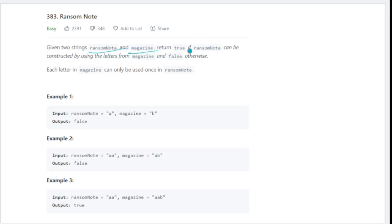Let's see what the question says. The question says you have been given two strings: ransom note and magazine. Return true if ransom note can be constructed by the letters of magazine, and false otherwise. That means you have two strings, one is ransom note, other is magazine.